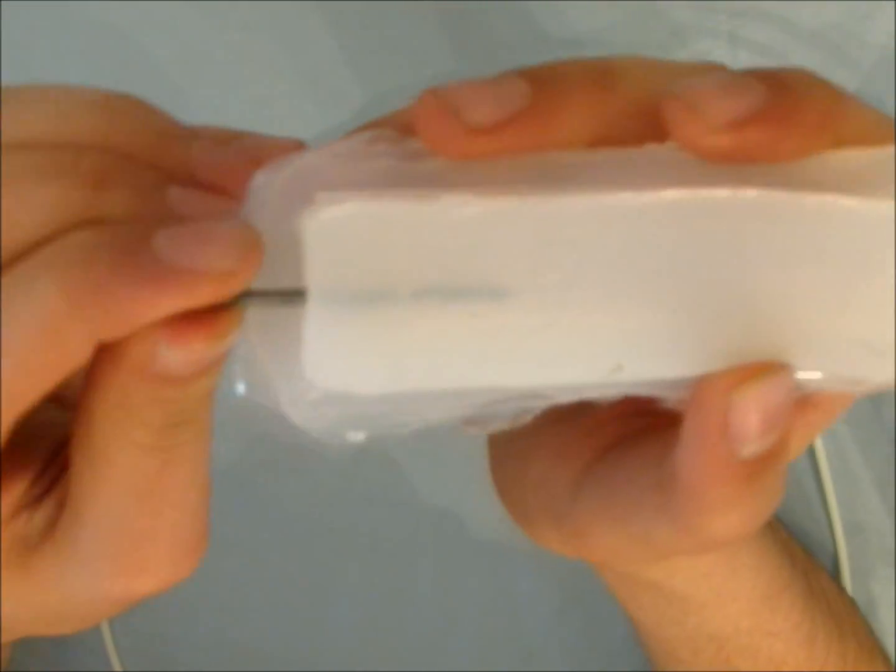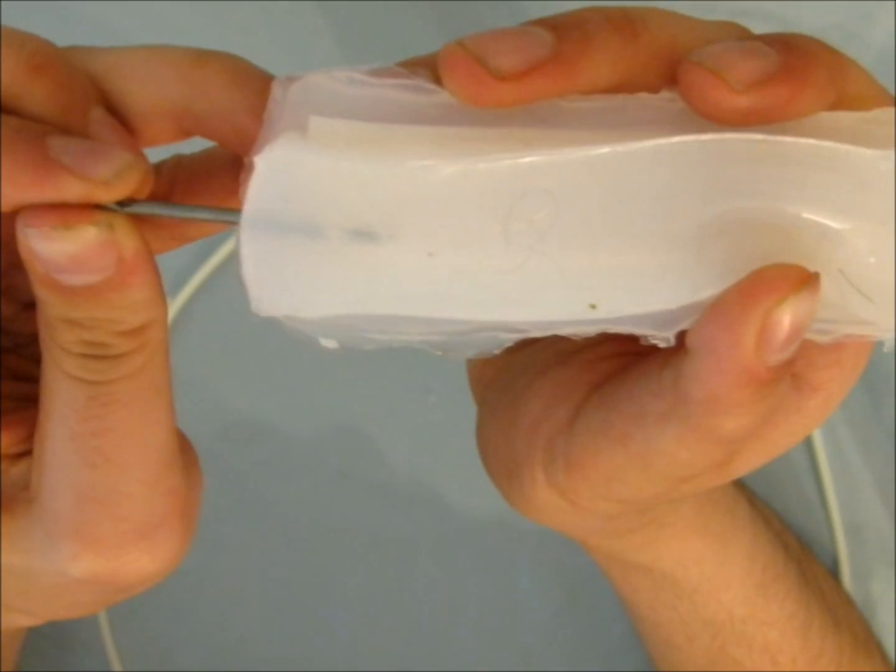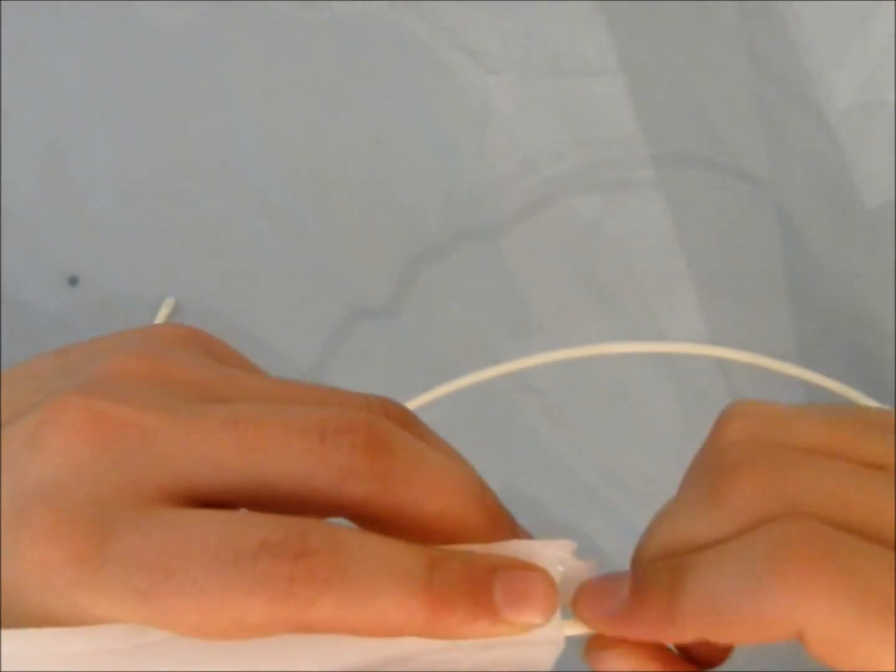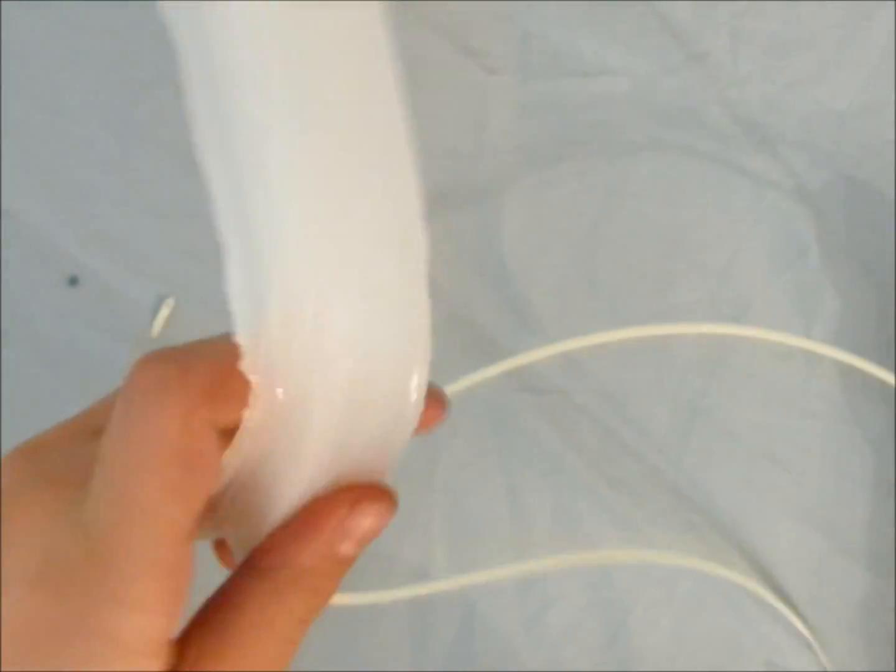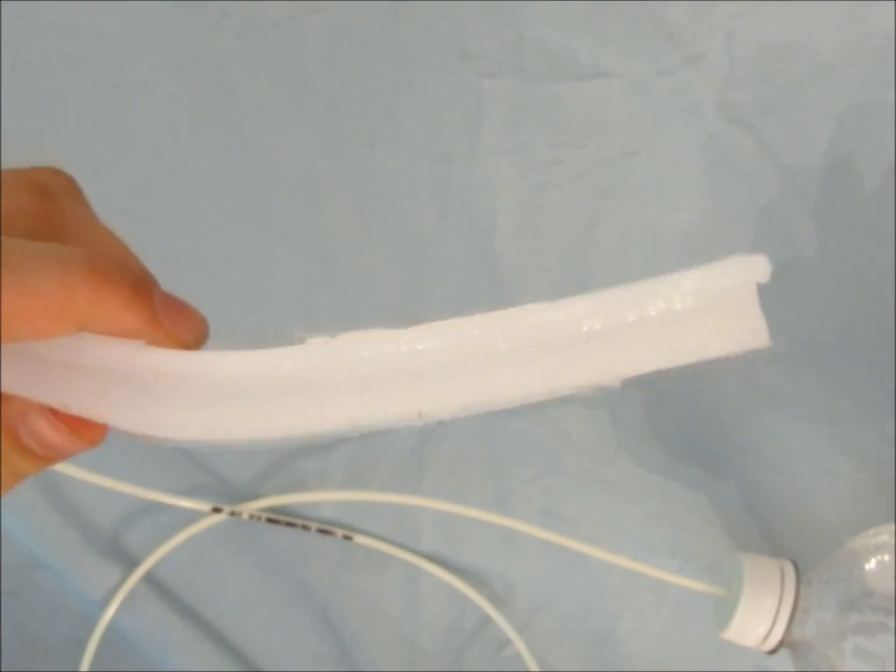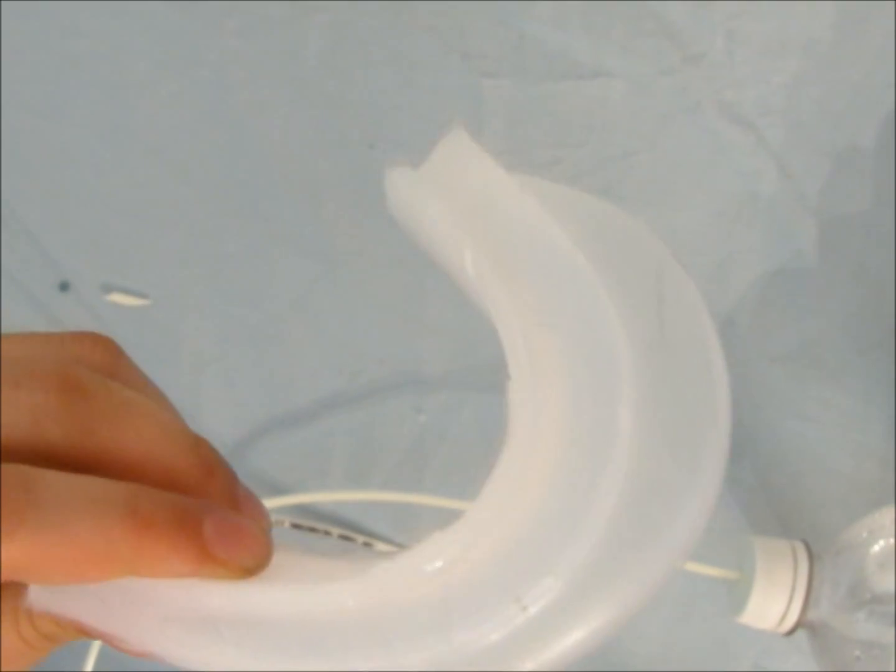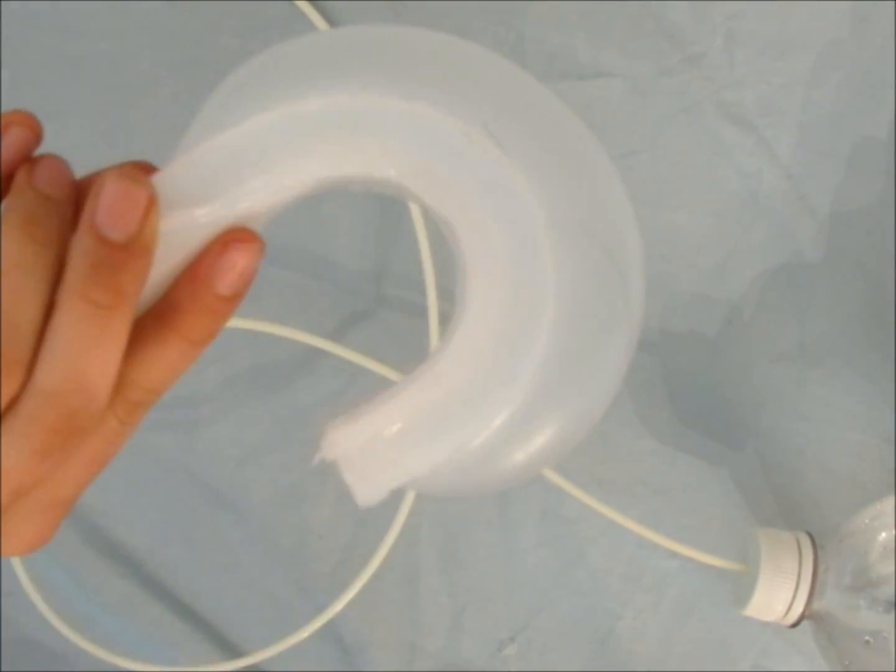After the robot has cured, puncture one side with the nail. Insert the free end of the tubing into the hole made by the nail. Gently squeeze the bottle to inflate the robot. As you can see, this robot curls. However, it is not yet complete.